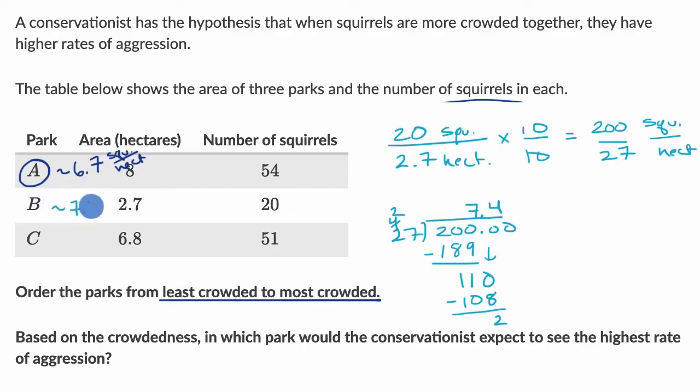This is approximately 7.4 squirrels per hectare. So we already see that park B is more crowded than park A.